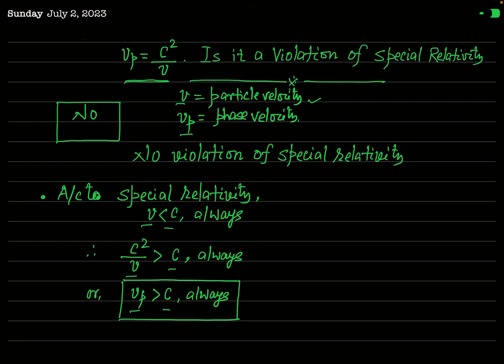This result raises a question in our mind: is this a violation of the special theory of relativity or not? The answer is no — this is not a violation of special relativity. Although the phase velocity vp is greater than c, this does not violate the special theory of relativity or Einstein's postulate.